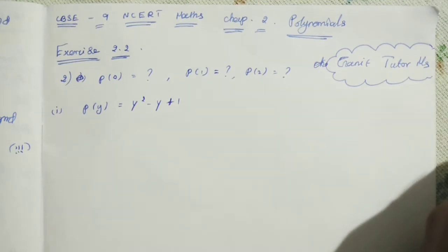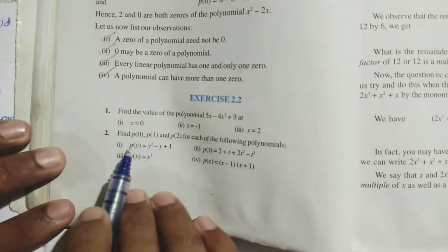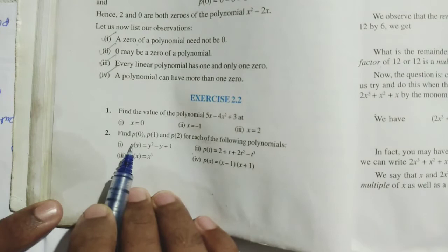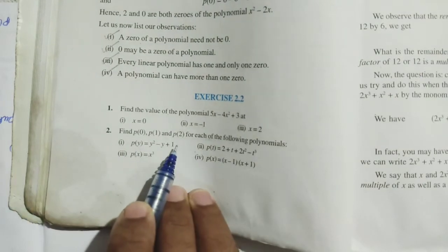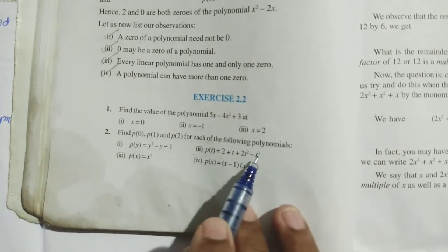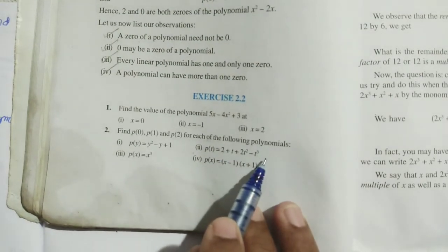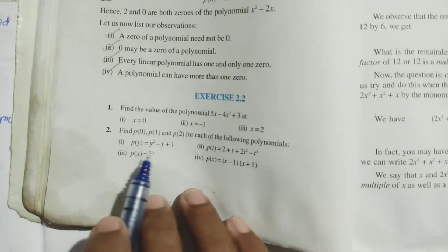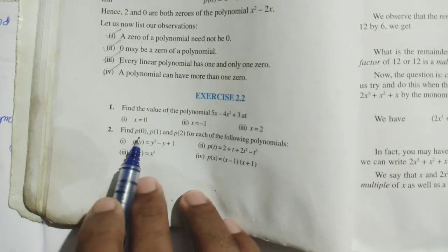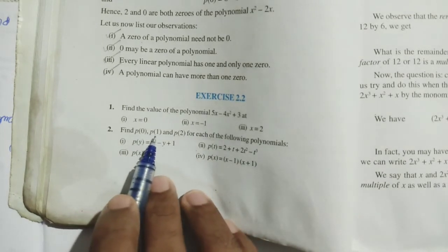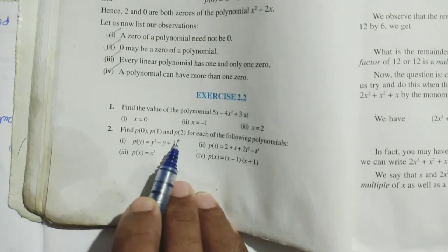They have given this problem — they are asking here: find P of 0, P of 1, and P of 2 for each of the following polynomials. They have given a polynomial and we should find P of 0, P of 1, P of 2.